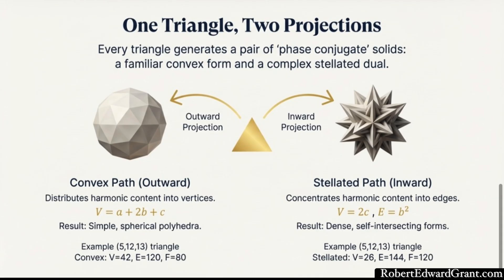That idea of dual directions, outward versus inward, brings us to the last big unifying concept: the generating triangle supports two necessary expressions of its stability. We call them phase conjugates. The same triangle creates two paths. The first is the convex path, the outward distribution that maximizes the vertex count and creates those smooth spherical polyhedra we know. This path satisfies all the standard rules for stable geometry. But then there's the second path, the stellated path. This is the inward concentration. It flips the factors and maximizes edge density instead. It creates high-density self-intersecting structures, the spiky stellar polyhedra that seem to violate normal rules of stability.